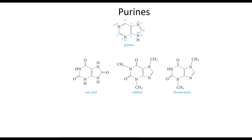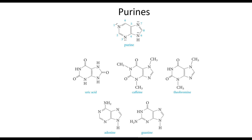Caffeine, present in coffee, tea, and cola beverages, and theobromine in cocoa are also purines. Perhaps the most important purines in nature are adenine and guanine, two of the nitrogen bases present in the nucleic acids DNA and RNA. Many nitrogen heterocycles play a role in medicine.